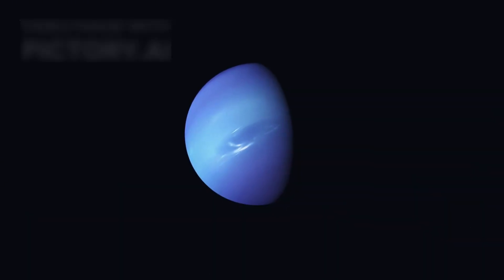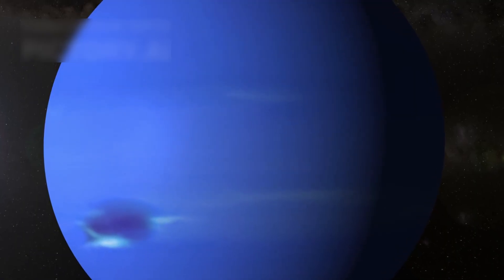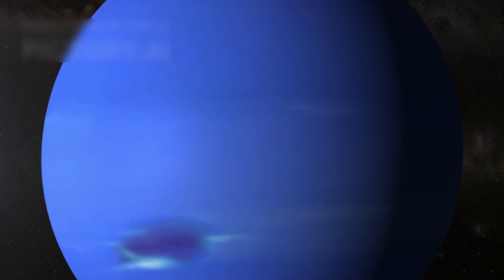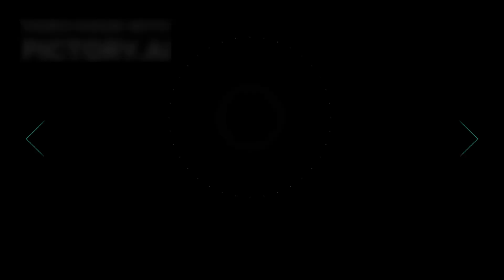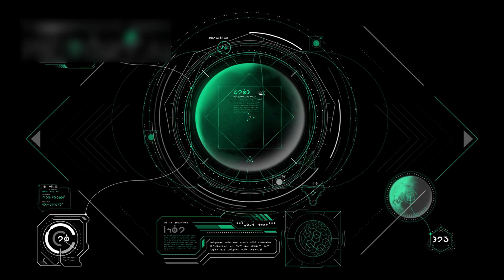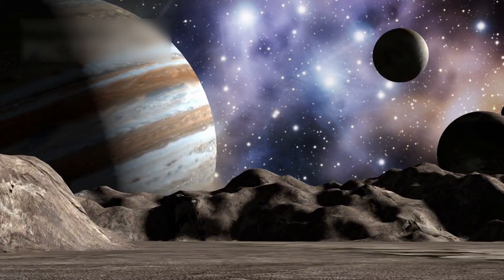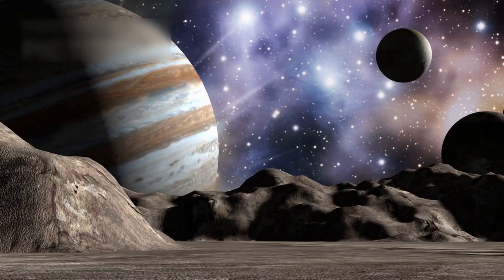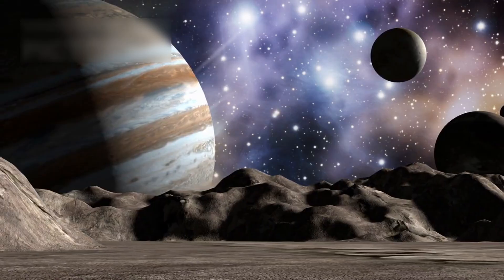Voyager 2 explored Uranus and Neptune, becoming the only probe ever to visit them. It unveiled ice geysers on Triton, magnetic fields on Uranus, and Neptune's violent weather. These discoveries reshaped scientific understanding. We learned that moons can be geologically active, that outer planets possess atmospheres and weather systems, and that the boundaries of our solar system are more complicated than anyone expected.